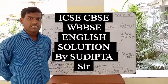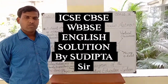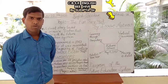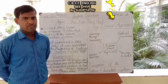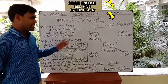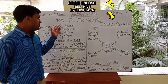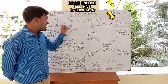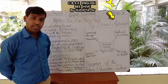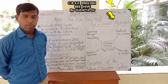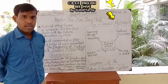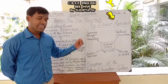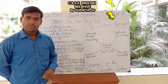Today we have selected one of the most interesting topics from your book Beehive. This is the first chapter, which is none other than 'The Fun They Had' by American writer Isaac Asimov.